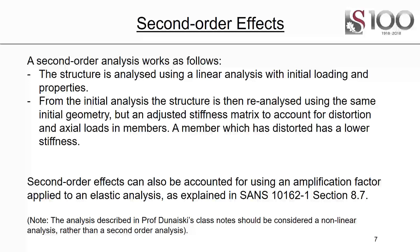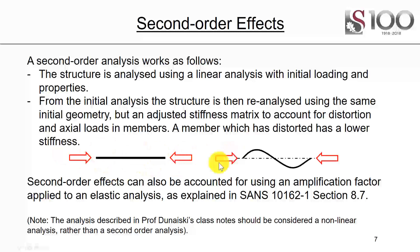A second-order analysis works as follows. The structure is analyzed using a linear analysis with initial loading and properties — you feed in your geometry and loads, and get bending moments and forces. Then, from the initial analysis, the structure is re-analyzed using the same initial geometry but with an adjusted stiffness matrix to account for distortion and axial load in members. A member which is distorted has a lower stiffness — when you push on a curved beam, it will distort more easily than a straight beam. A second-order analysis modifies the stiffness matrix: it uses an elastic analysis followed by an updated elastic analysis with a modified stiffness matrix to account for this.